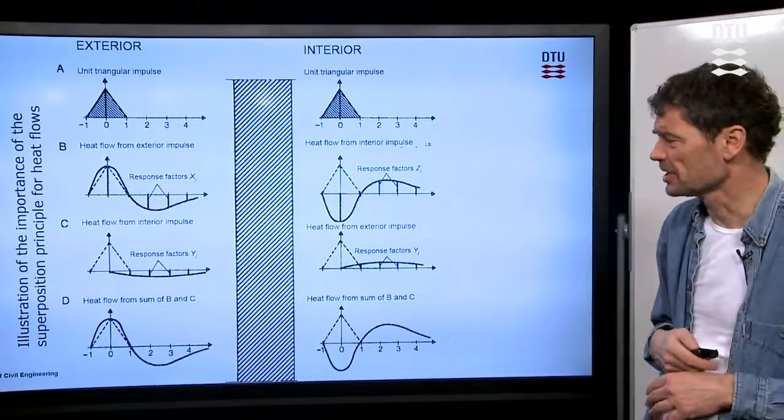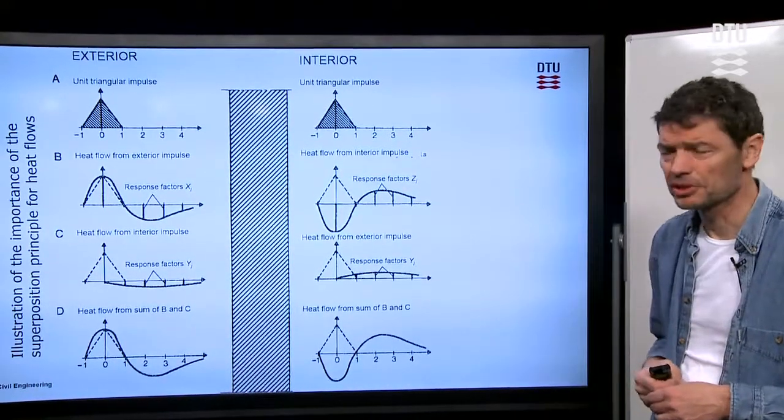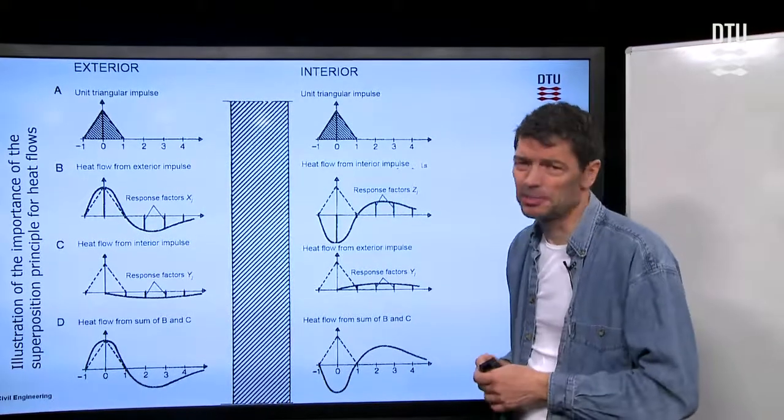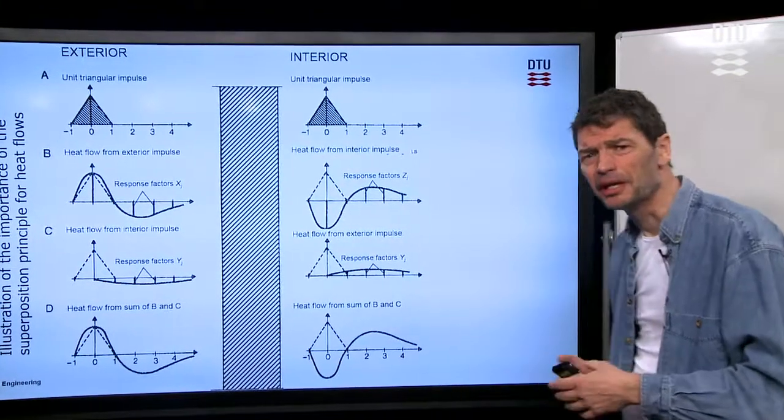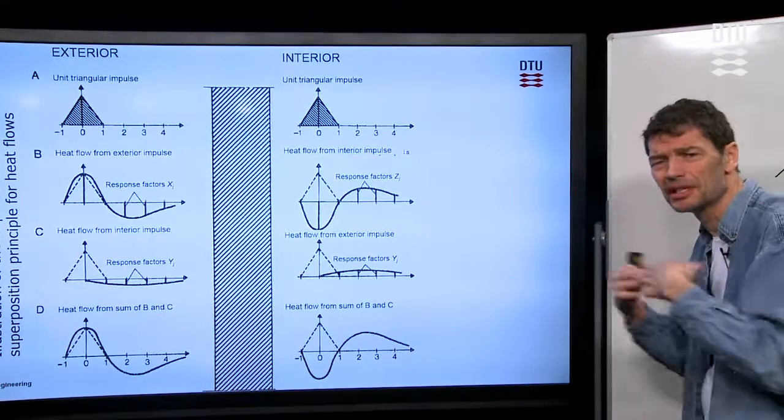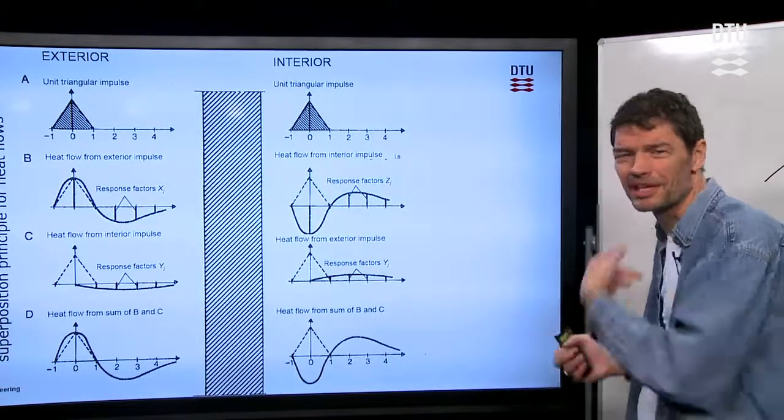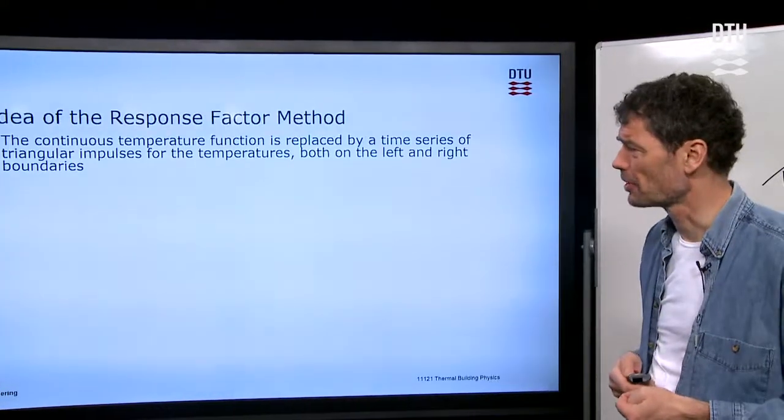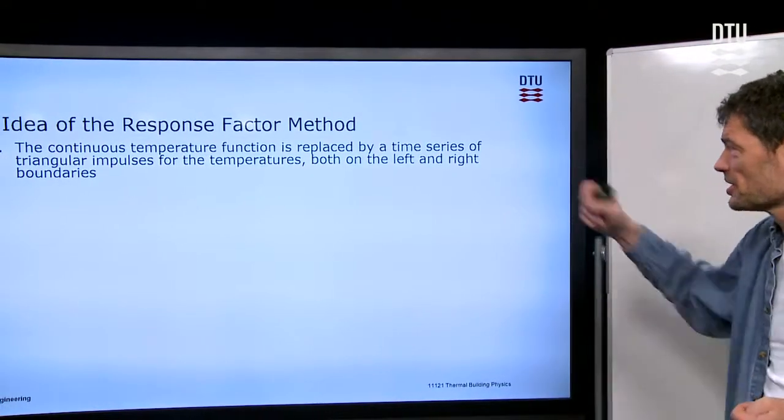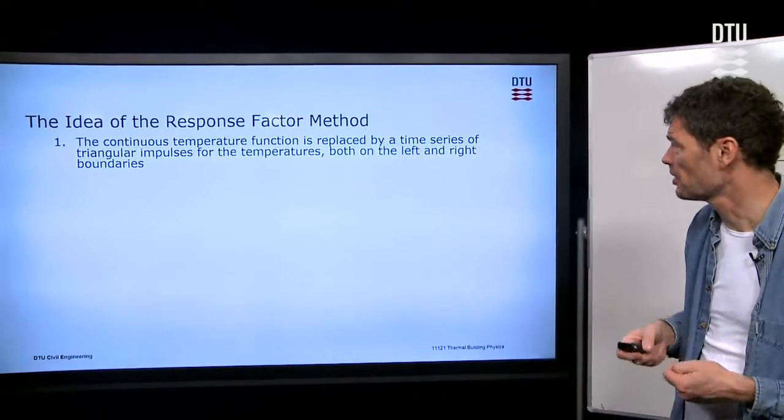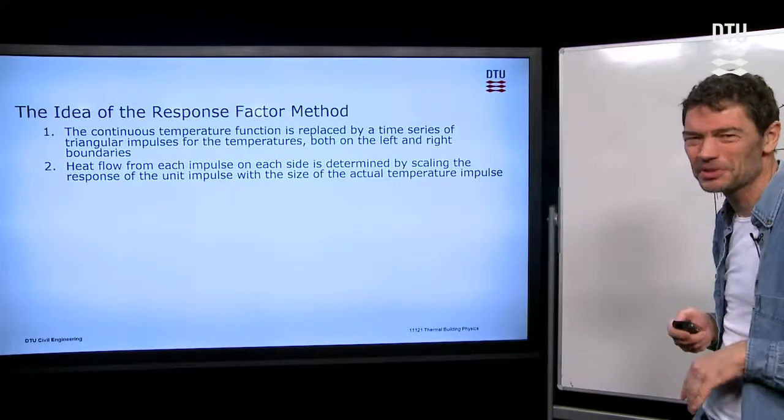Okay. So now we have response factors as time series for the different impulses on the same side and across the wall. And we can add them all up on either of the sides and get some total responses when it's added up. So if we can calculate those response factors as time series, looking to the theory, it's a very efficient way to calculate heat flows in and out of walls when we calculate this in conjunction with the whole building, as I indicated before, and why it's the purpose for what we do.